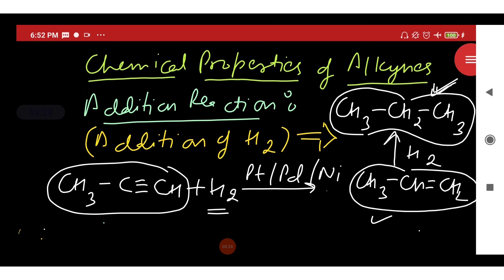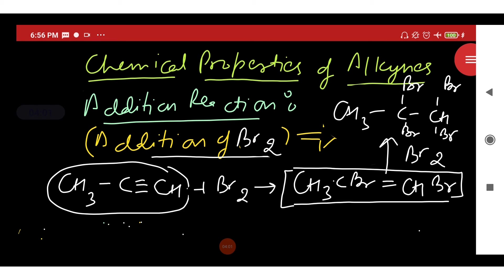Now let us discuss addition reactions. Alkynes contain triple bond and they add up two molecules of dihydrogen in the presence of catalysts like nickel, platinum or palladium. On addition of first molecule of hydrogen, alkenes are formed. On further addition, alkanes are formed.